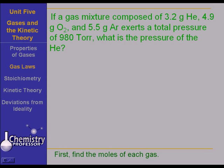Here's a problem. If a gas mixture composed of 3.2 grams helium, 4.9 grams oxygen, and 5.5 grams argon exerts a total pressure of 980 torr, what's the pressure of the helium itself?